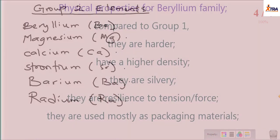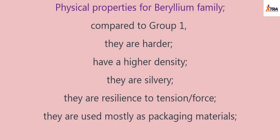What are some of the physical properties of the beryllium family? Compared to group 1, they are harder. They have a higher density — unlike group 1 elements which are soft silver-white solids, group 2 elements are relatively harder. They have a higher density, which makes them more resilient to force. They are used mostly as materials, as packaging materials or as raw materials needed to produce packaging materials, due to their very low weight and high resilience.